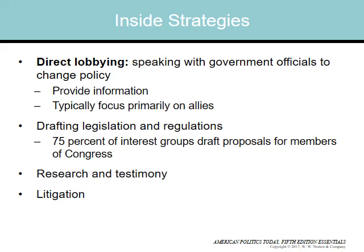Nearly all interest groups dedicate time to three inside strategies: direct lobbying, drafting legislation and regulations, and offering expertise through research, hearings, and sworn testimony. Litigation is less common as it's costly and time consuming, but it can be an effective way of shaping policy. Direct lobbying involves speaking with government officials to change policy, providing information, and typically focusing on those who are your allies. About 75% of interest groups draft proposals for members of Congress, and most legislation introduced today is prepared by lobbyists.